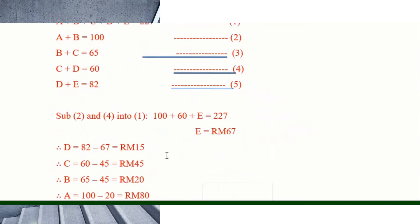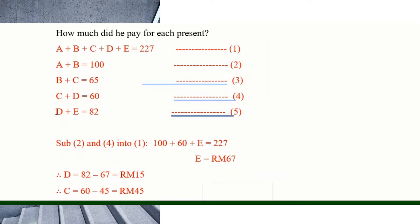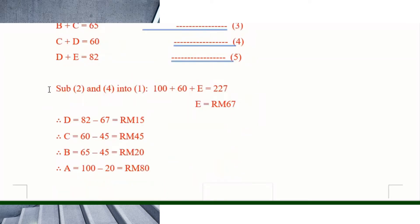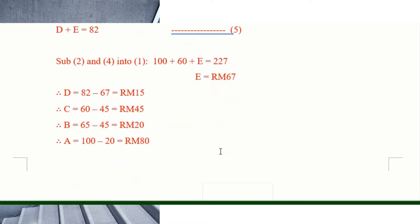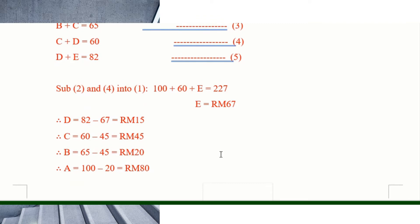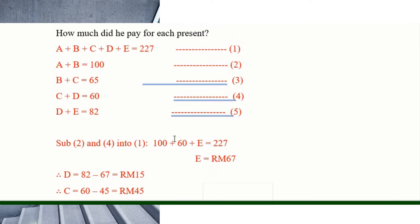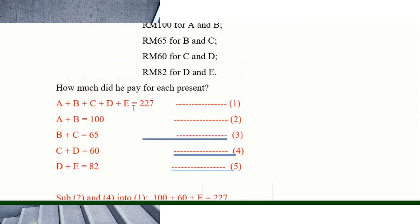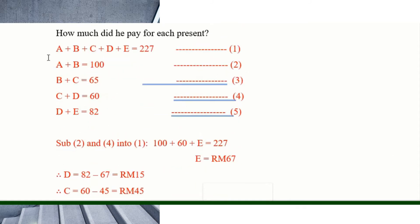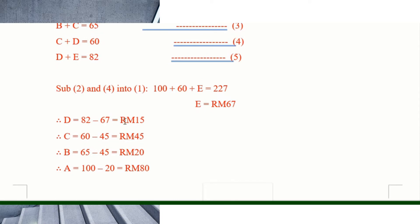So e equals 67. Once you find e, you can find d using d plus e equals 82, then find c, then b, then a — step by step. You'll find all five values. Whenever you see so many unknowns, write them down one by one so you know what's going on.